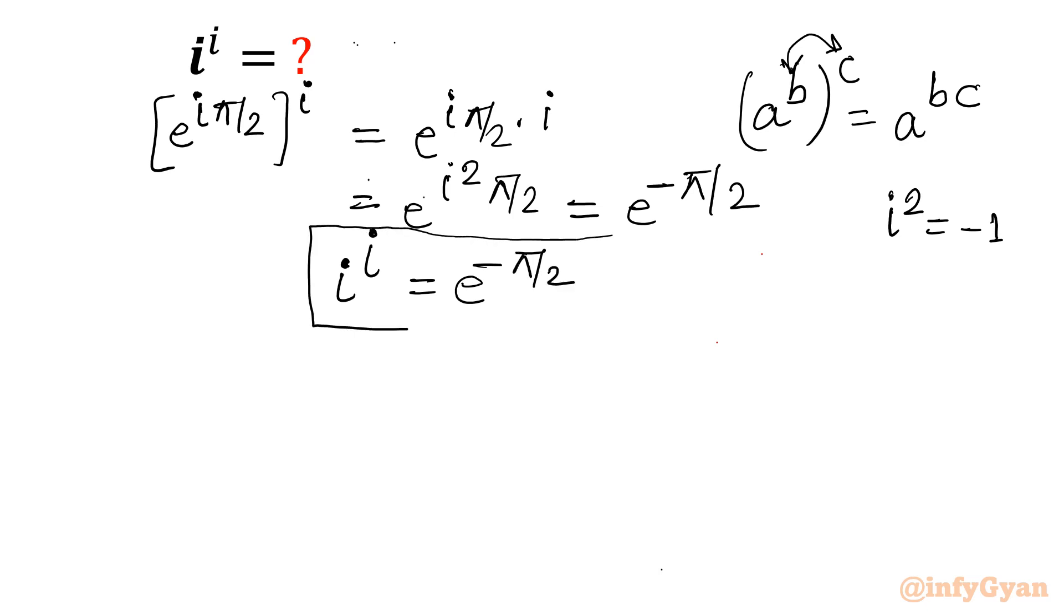So i^i is e^(-π/2). Now in most of the exams I have seen, it is asked in the form of hyperbolic functions. For this, there are four options: option a, b, c, d.